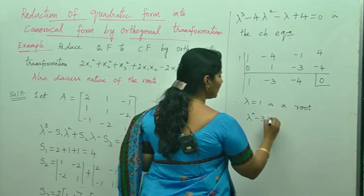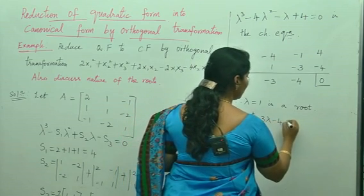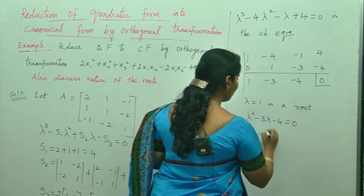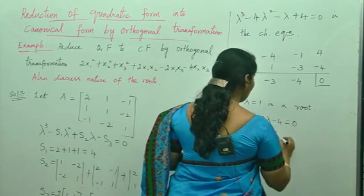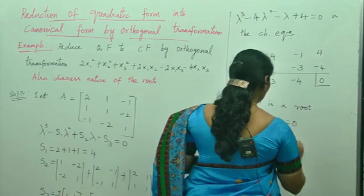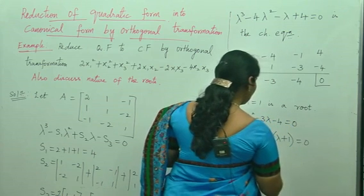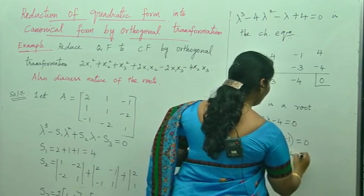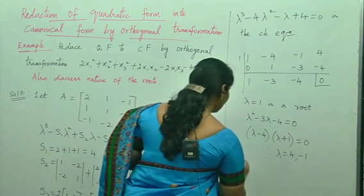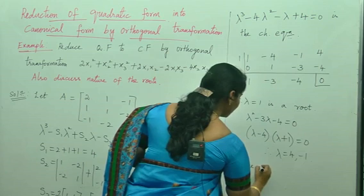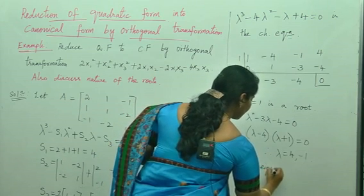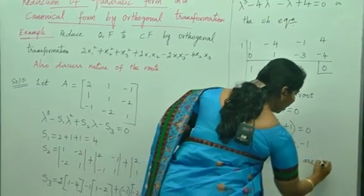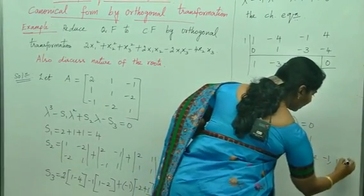Using the reduced quotient, lambda squared minus 3 lambda minus 4 equals 0. Factorizing: (lambda minus 4)(lambda plus 1) equals 0. Therefore the eigenvalues are lambda equals minus 1, 1, and 4. So we have got 3 eigenvalues.